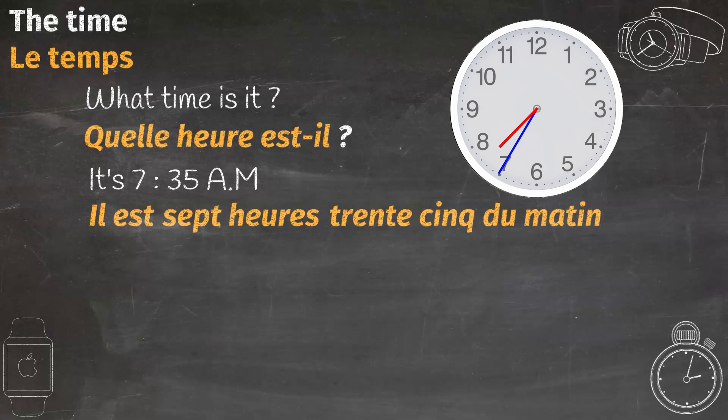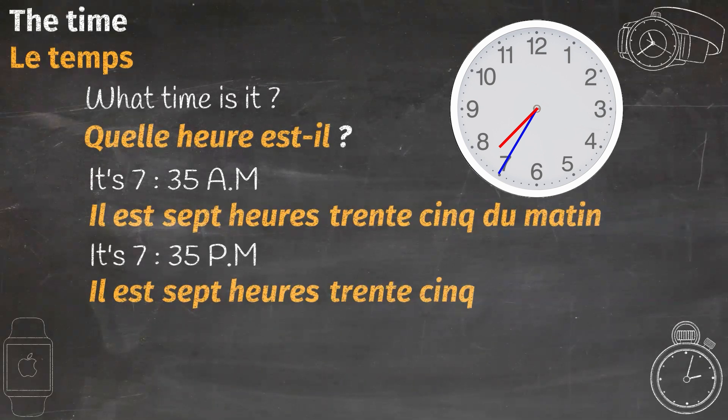Next one. What if I want to say it's 7:35 p.m.? Well, it's the same as the previous example, just the final part changes. Il est sept heures trente-cinq. Now it's time for the p.m. We would say du soir, which means of the evening. Together, il est sept heures trente-cinq du soir.